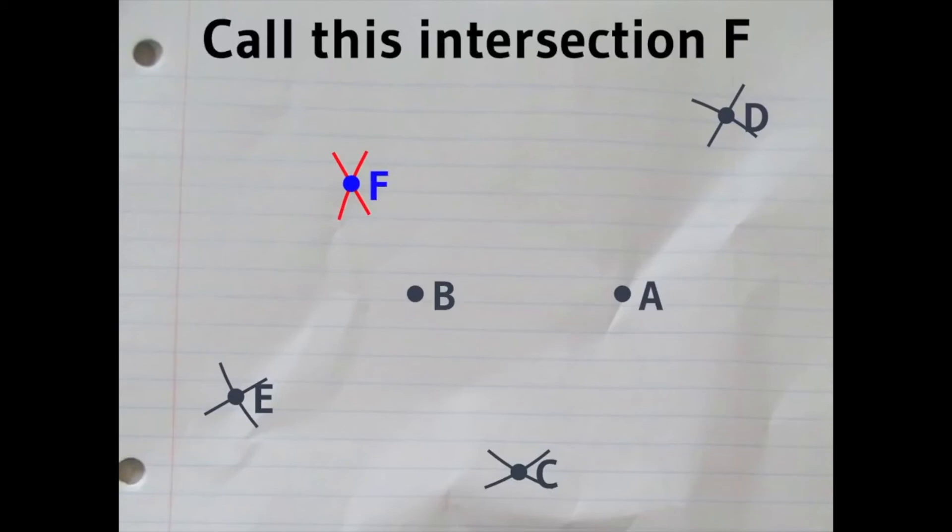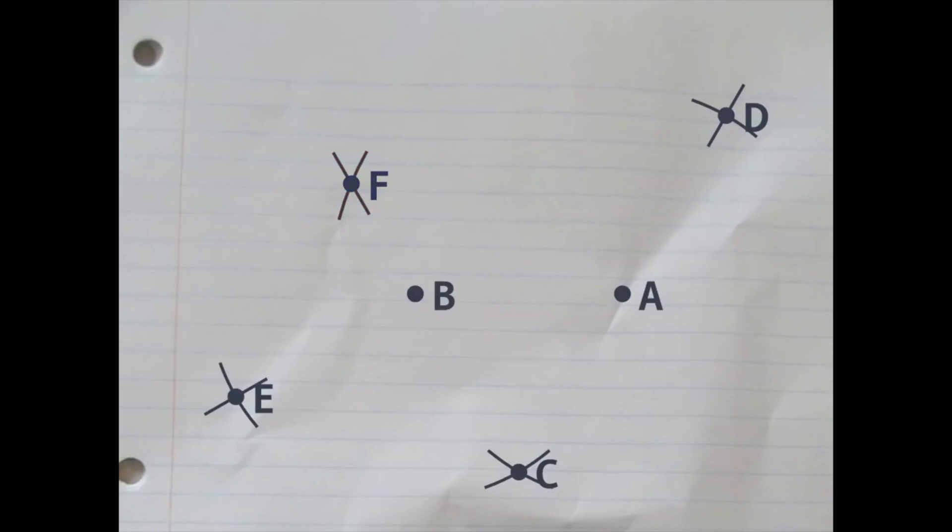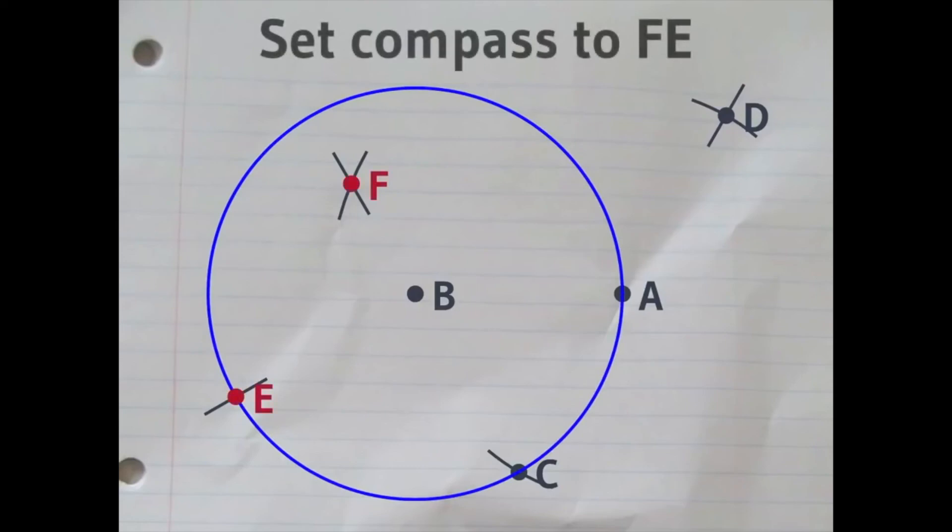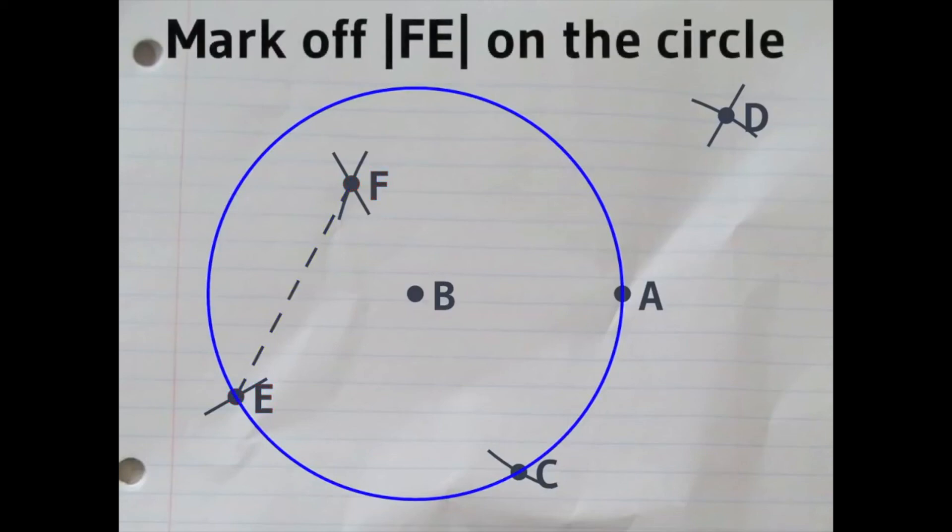Finally, the distance between E and F is exactly right to be the edge length of the pentagon. So, if you set your compass to that distance between F and E, you can then mark that distance off around the circle to get the five corners of the regular pentagon.